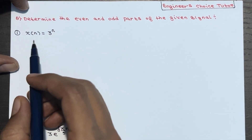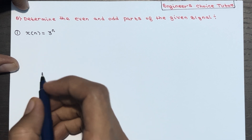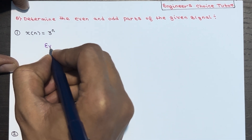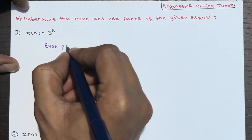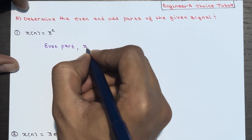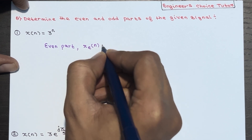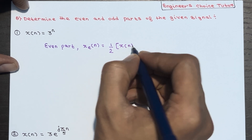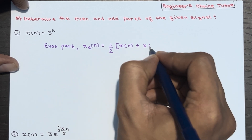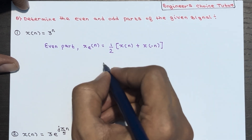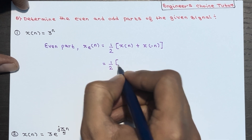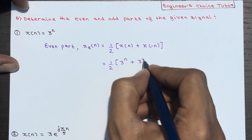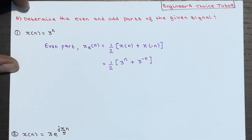So first we have x of n is equal to 3 to the power n. We have to determine the even part and the odd part. Let's go for the even part first. The even part, denoted as xc of n, uses the formula: xc(n) = (1/2)[x(n) + x(-n)]. So this becomes (1/2)[3^n + 3^(-n)]. This is the even part.